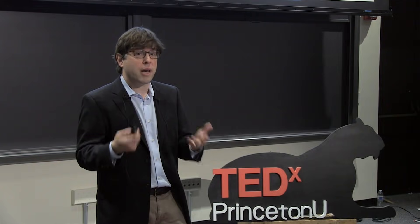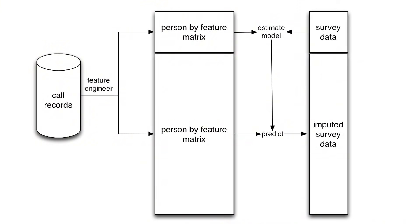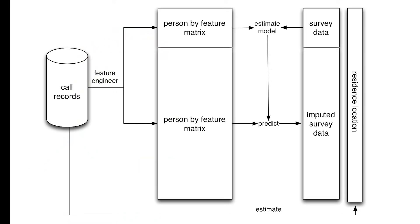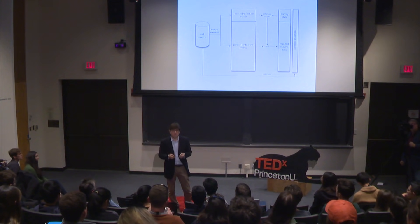It actually finds many more subtle patterns. Once you have this machine learning model, you can impute the survey responses for all 1.499 million other people. Impute is just a fancy social science term for guessing. So in essence, by doing a survey of a thousand people, they were able to approximate what would happen if you did a survey of 1.5 million people. Then they estimated where everyone lived — even though call records did not have names and addresses, what towers you make phone calls from at night is a pretty good approximation of where you live.